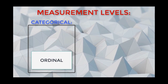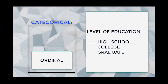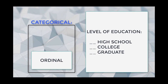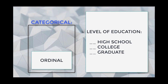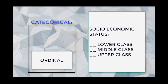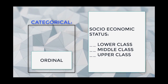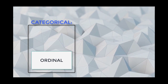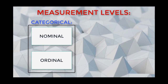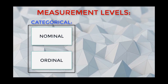Our next measurement level is ordinal. For ordinal measurement, we capture data in categories, but those categories are also ordered — order matters. An example is level of education: high school, college, or graduate level. The categories are in ascending order, reflecting more or less of something. Another example is socioeconomic status: low, middle, or upper class. Both nominal and ordinal measurement are considered categorical, and for this level there can be limited variance because there are only a few categories captured.